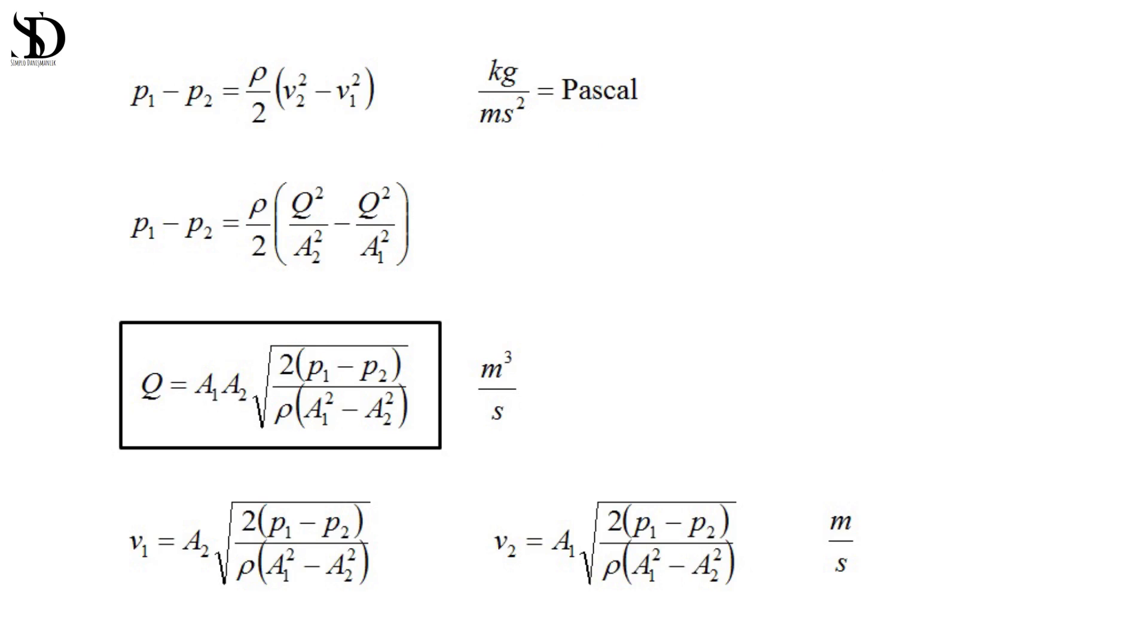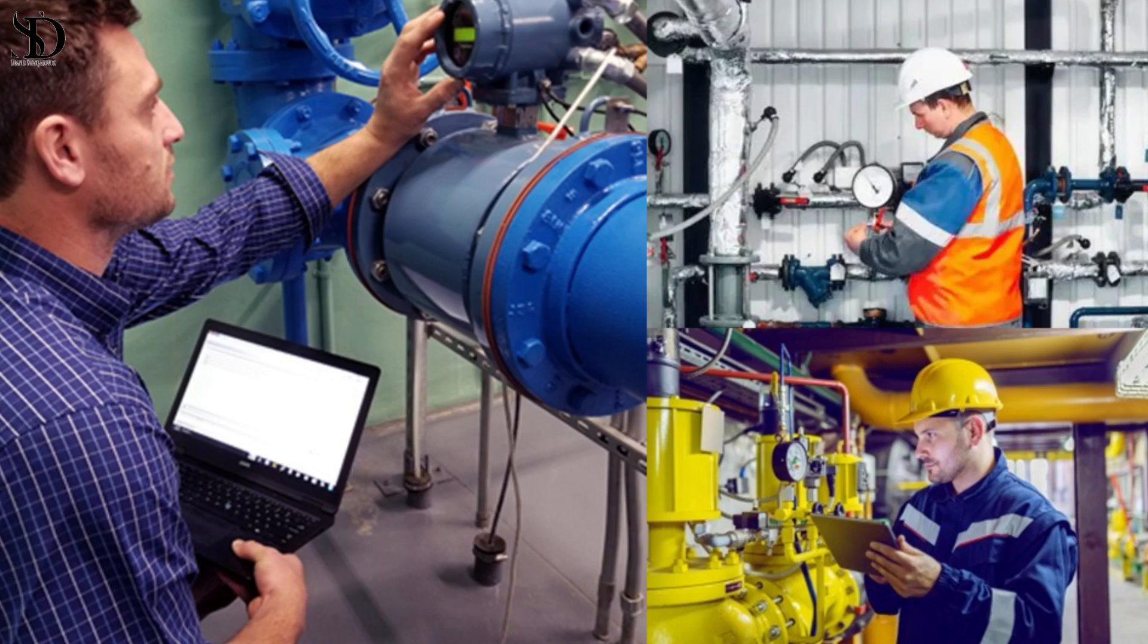Installation and maintenance: proper installation alignment is crucial for accurate measurements. Regular inspections are essential to monitor for erosion or build-up that could affect accuracy.